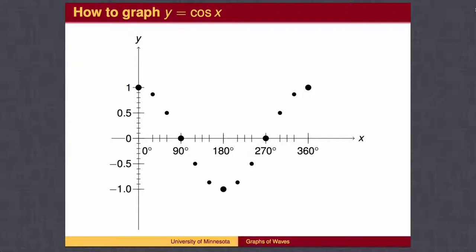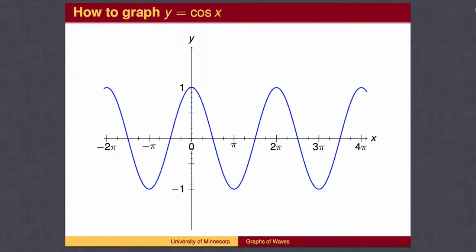Plus or minus 1/2 at 60°, 120°, 240°, and 300°. Plus or minus √2/2 at 45°, 135°, 225°, and 315°. We can then connect the dots and continue to draw multiple waves.